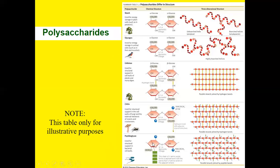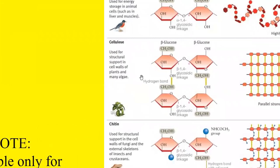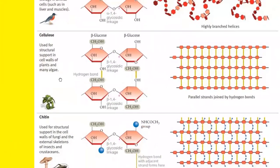Looking at the different polysaccharides: starch is where glucose is simply linked together; glycogen is where glucose is linked together but with branching; cellulose is glucose linked together with a different type of linkage. In cellulose, there is a covalent bonded linkage shown in dark, and then a hydrogen bond shown in yellowish-brown. The glucose is hydrogen bonding with its neighbor.